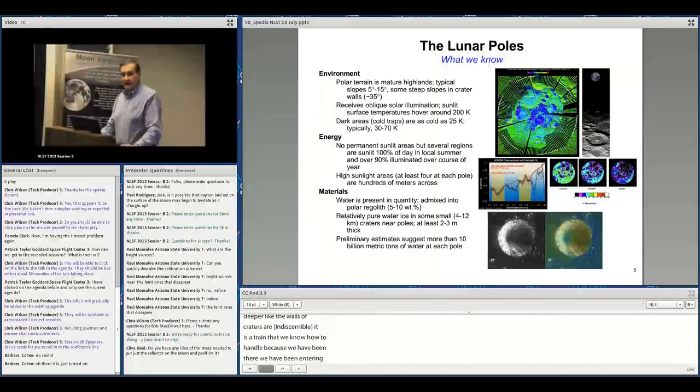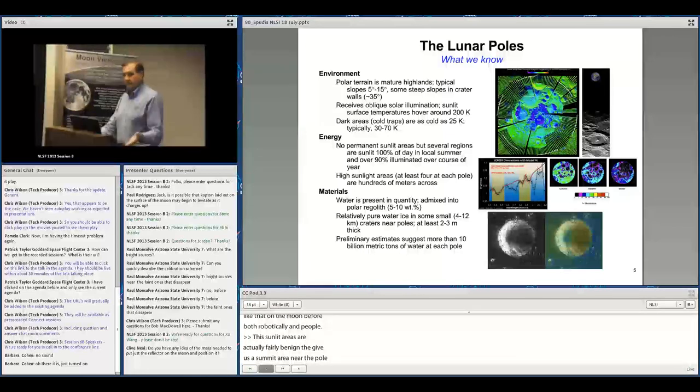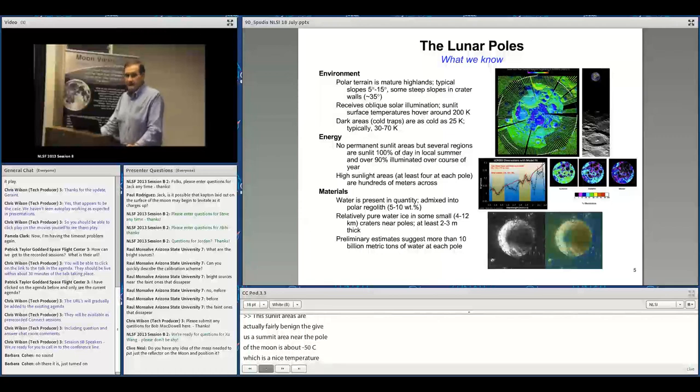Sunlit areas near the pole are fairly thermally benign at about minus 50 centigrade. Surfaces exposed to sunlight receive full solar incidence for electrical power generation. Dark areas are extremely cold, sometimes as low as 25 Kelvin, sometimes as high as 70 Kelvin, permitting sustainable presence with robotic machines and ultimately people.